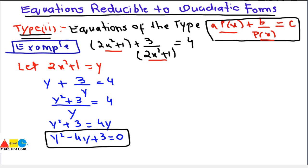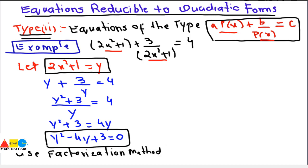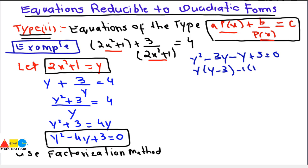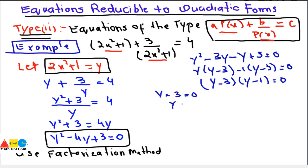We can now solve this equation for y and then put the value of y back to get the value of x. Using factorization: y² - 3y - y + 3 = 0, taking common factors gives (y - 3)(y - 1) = 0. So either y - 3 = 0, giving y = 3, or y - 1 = 0, giving y = 1.